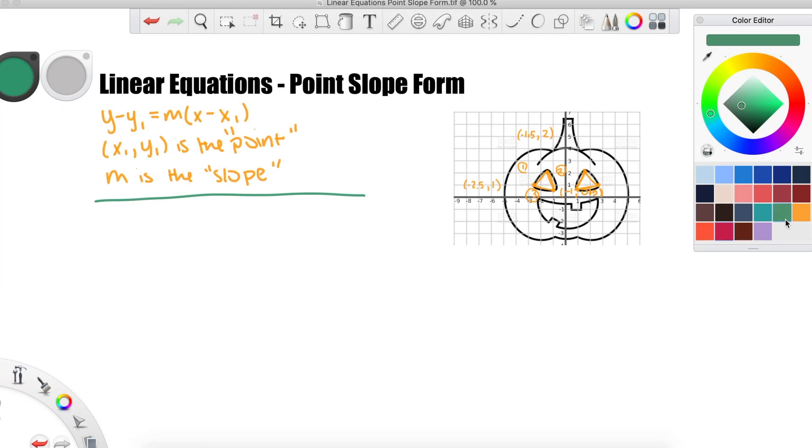When we're finding the equation, it'll be easiest to use point slope form because you can directly plug in the point and the slope, which we already know from the graph. Let's just do one line together. For the point, you can choose any point on the line. I'll just pick negative 2.5, 1.